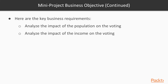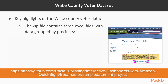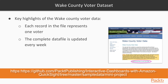Now let's review how the Wake County voter data looks. This file for the Wake County voter data will be from the website shown — the link is below. It's a zip file that contains three Excel files where data is grouped by precincts. Each record in every file represents one voter.